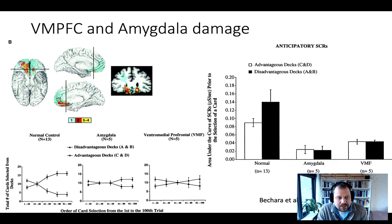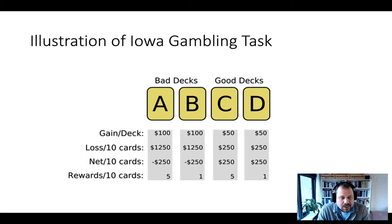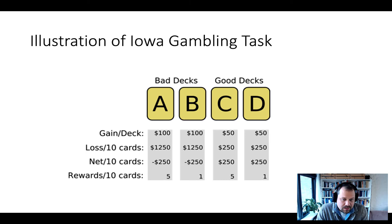In the Iowa Gambling Task, participants face four card decks — called A, B, C, and D — that have distinguishing features they can pick up over time. By experience, by picking up cards, you learn that there are some good decks and some bad decks.